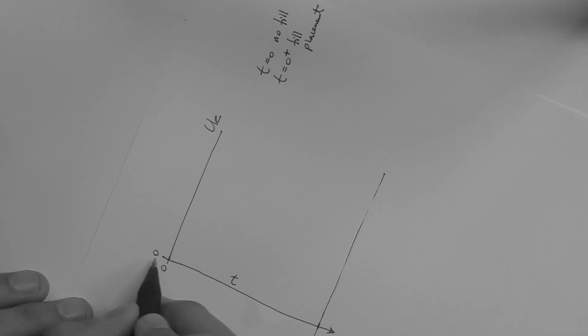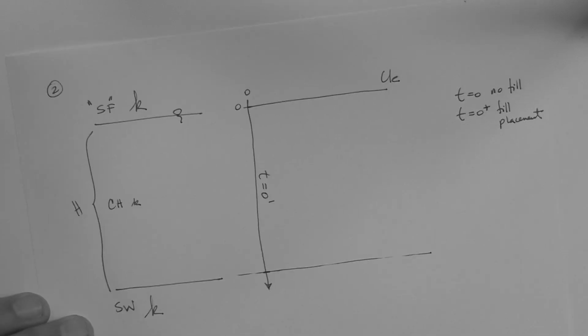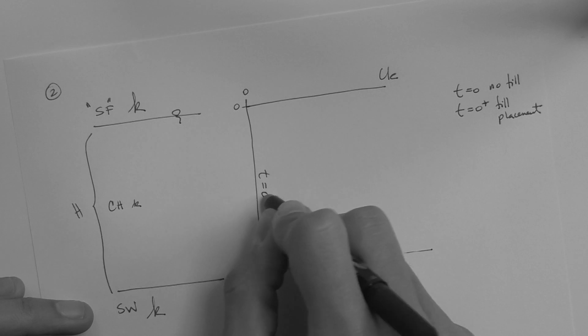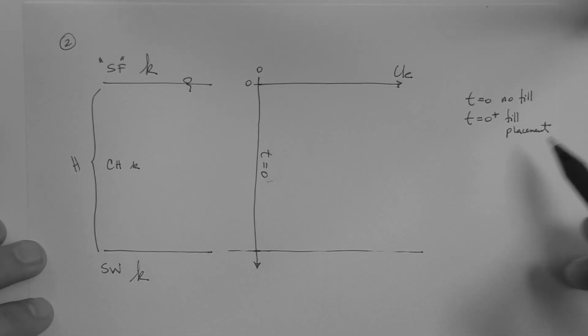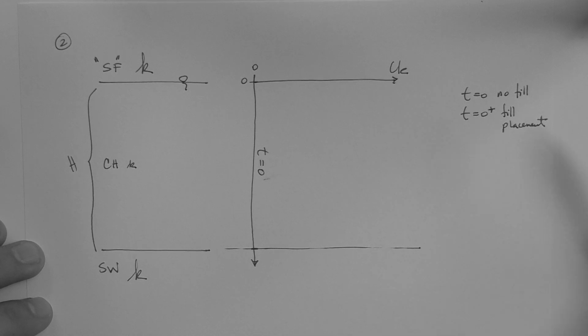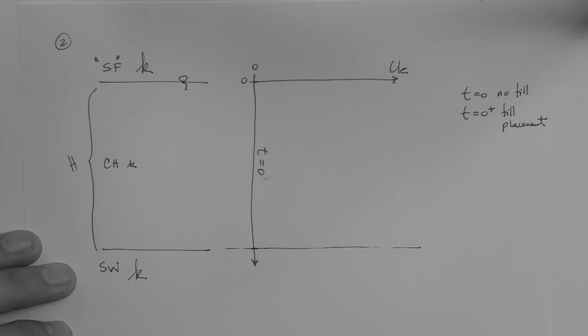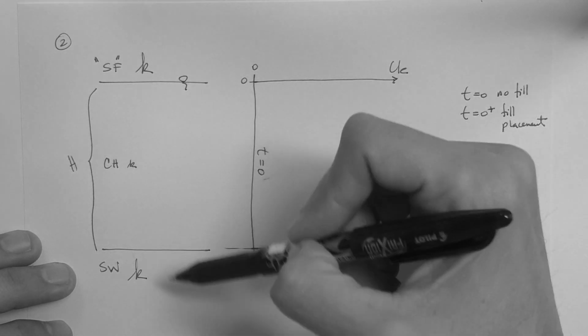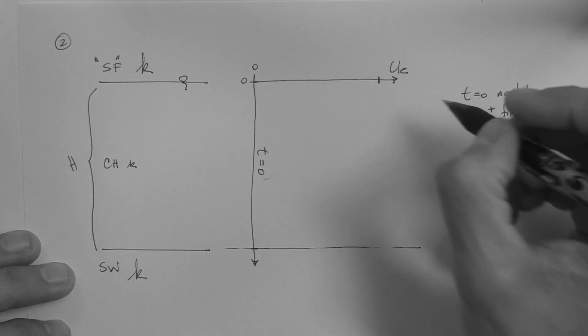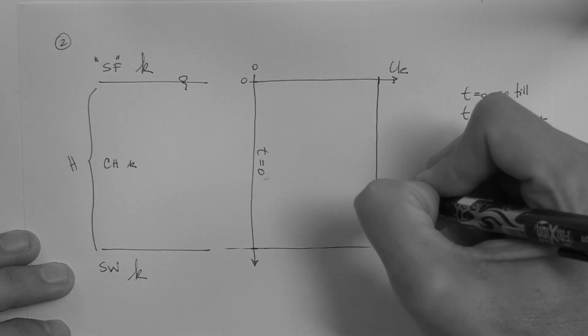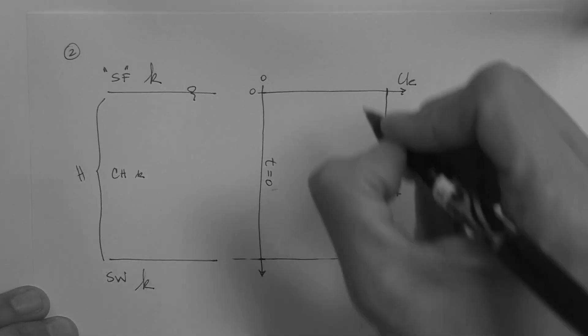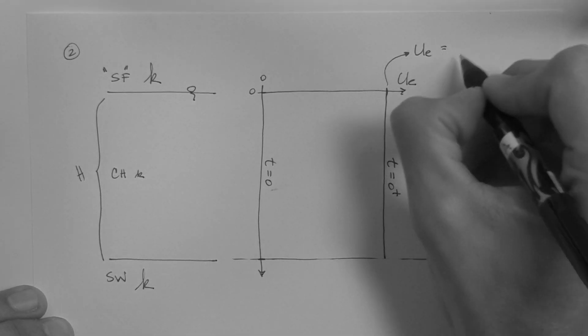That is because there is no load, so excess pore pressure has not been generated. Therefore, we can say that this line here corresponds to time equals zero. What happens at time equals zero plus, which corresponds to the placement of the load, or fill? At that time, the water takes all the load as excess pore pressure, and that happens throughout the layer. Therefore, at time equals zero plus, the curve actually looks like this.